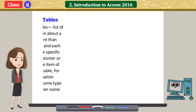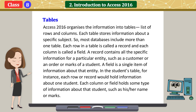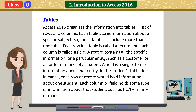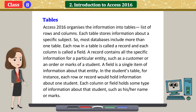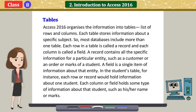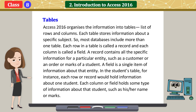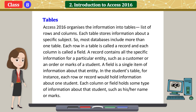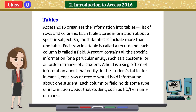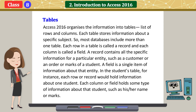Tables: Access 2016 organizes information into tables — lists of rows and columns. Each table stores information about a specific subject, and most databases include more than one table. Each row in a table is called a record, and each column is called a field. A record contains all specific information for a particular entity, such as a customer, an order, or marks of a student. A field is a single item of information about that entity.